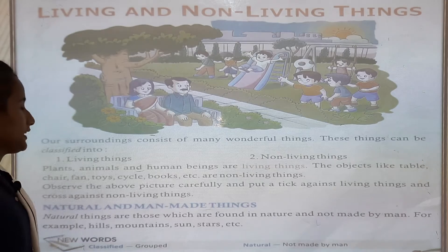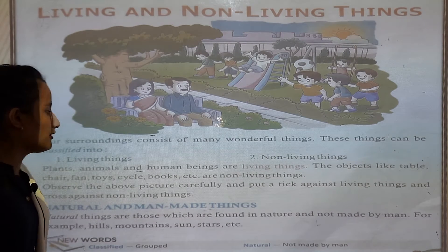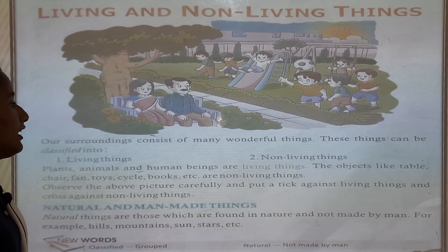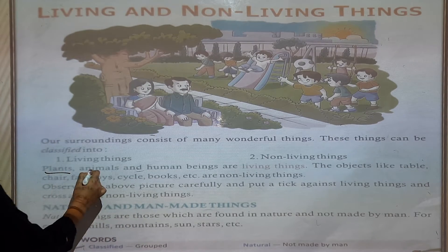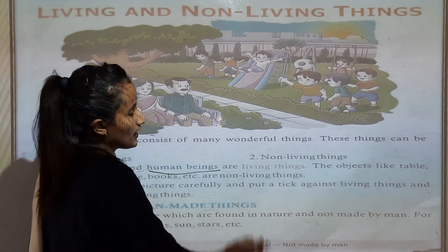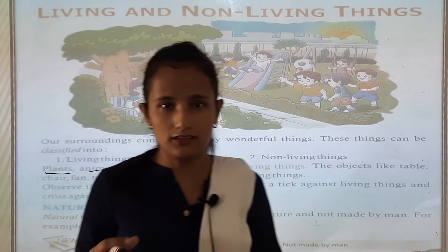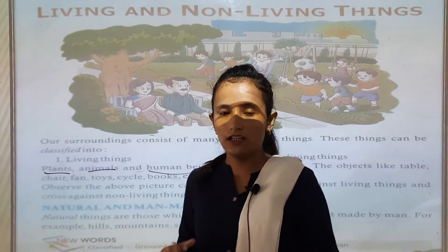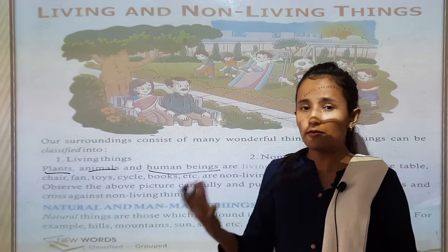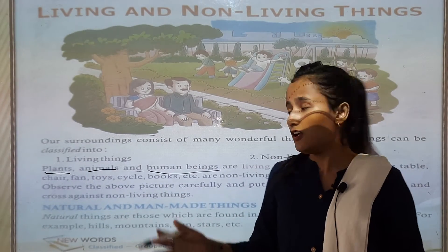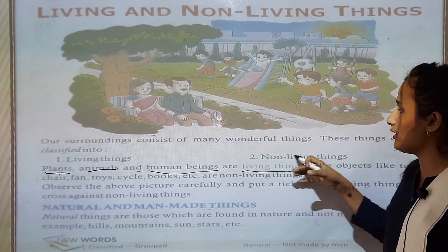The objects — like table, chair, fan, toy, cycle, books etc. — are non-living things. Plants, animals and human beings are living things because we breathe. We take in oxygen and release carbon dioxide. Plants, animals and human beings can breathe.